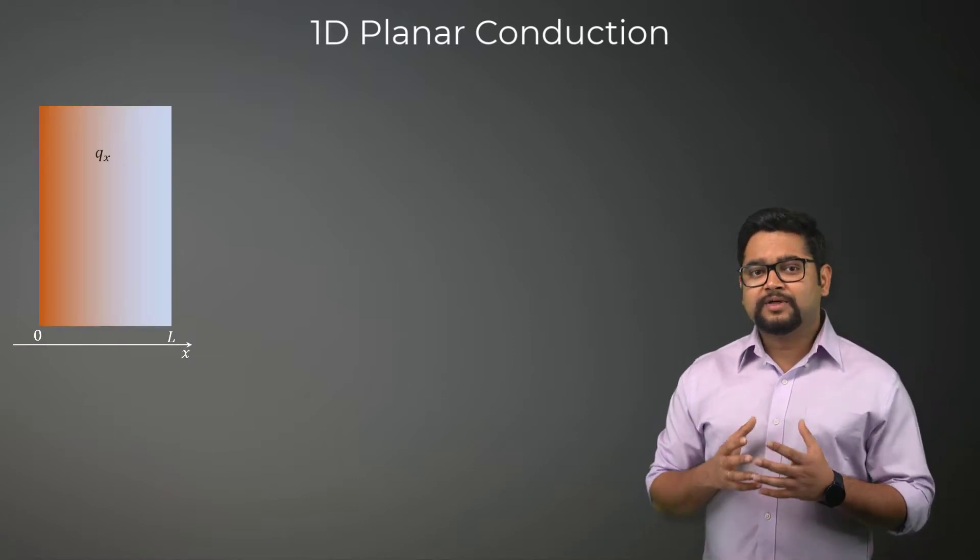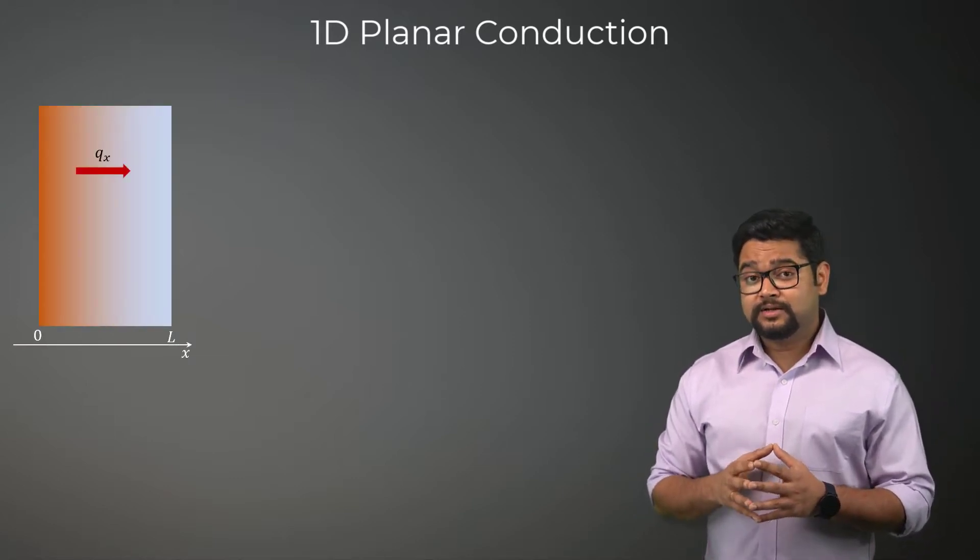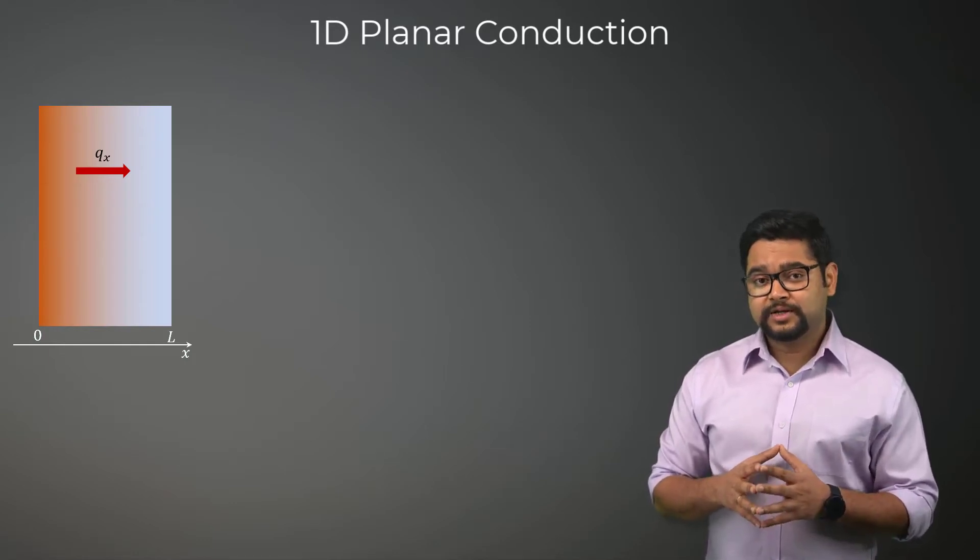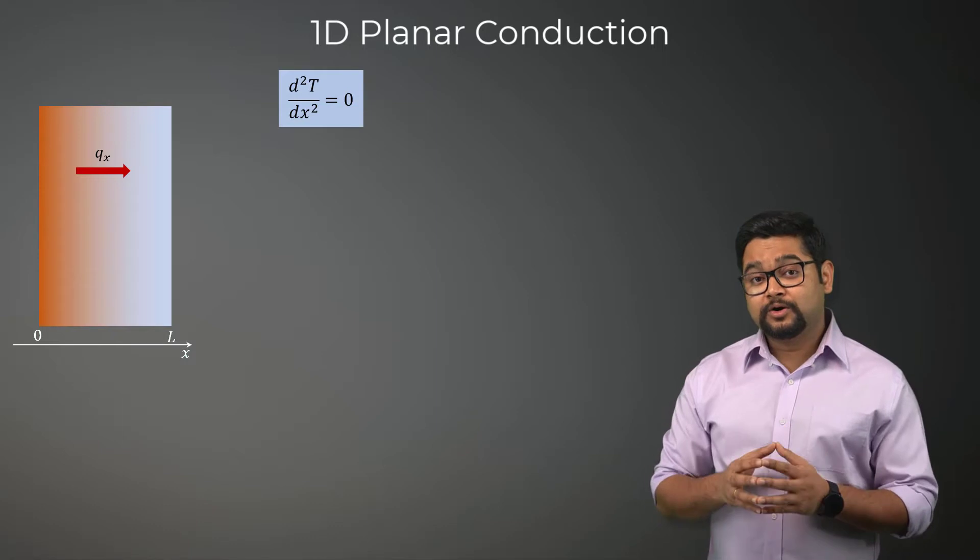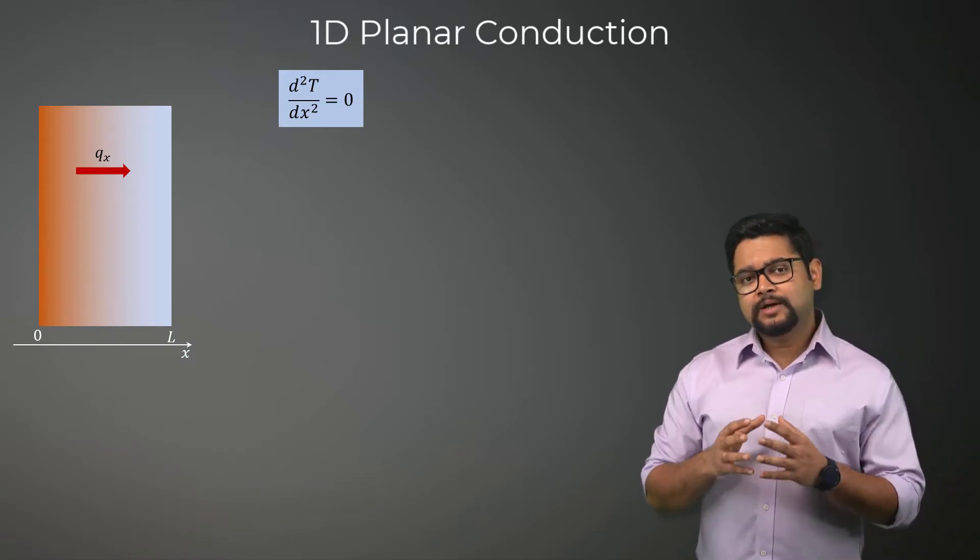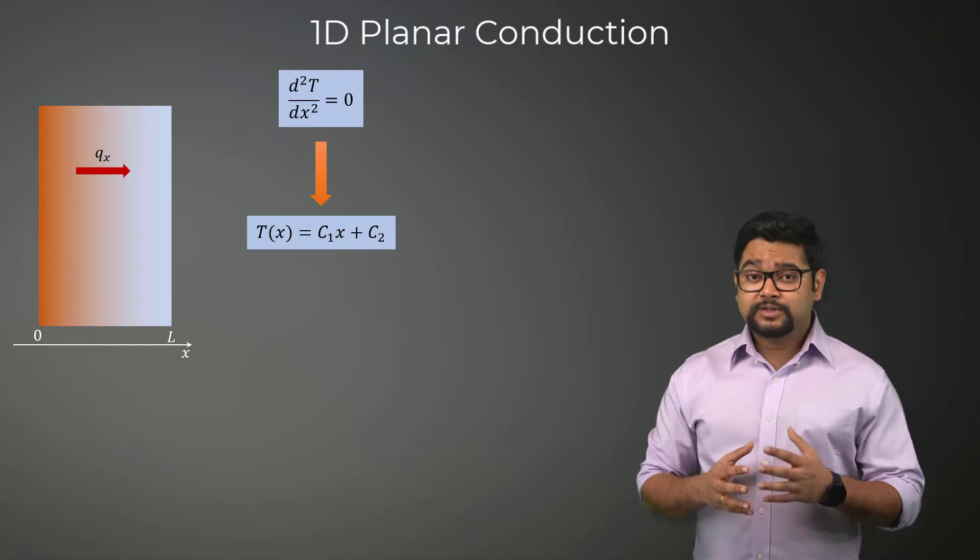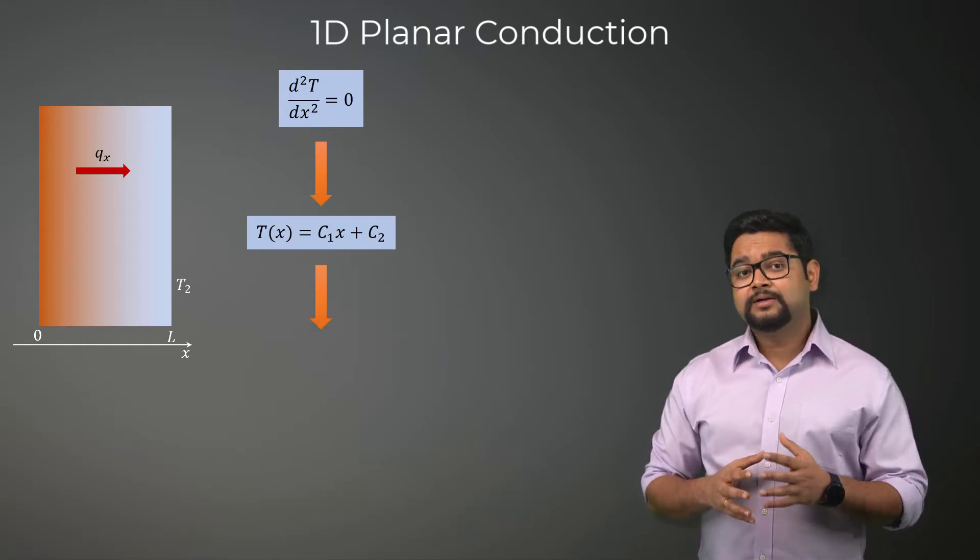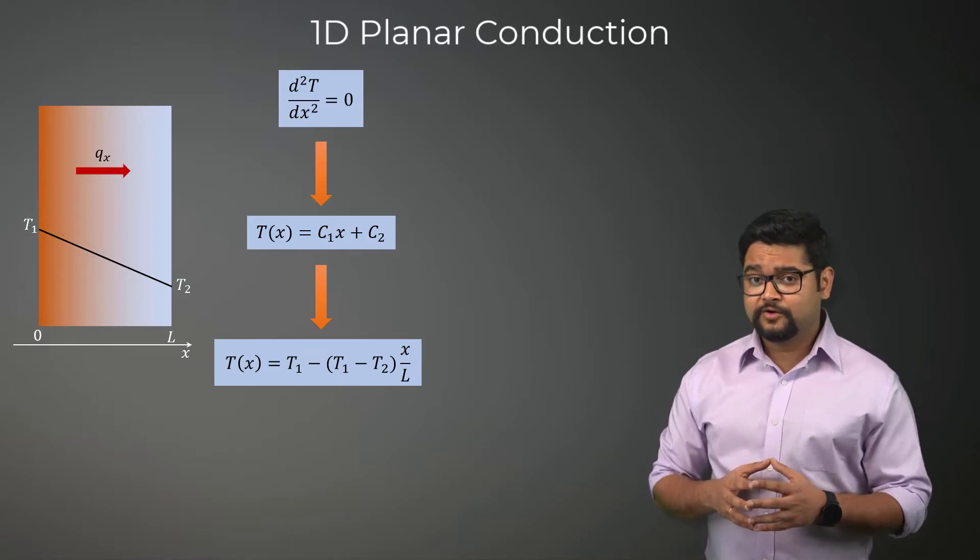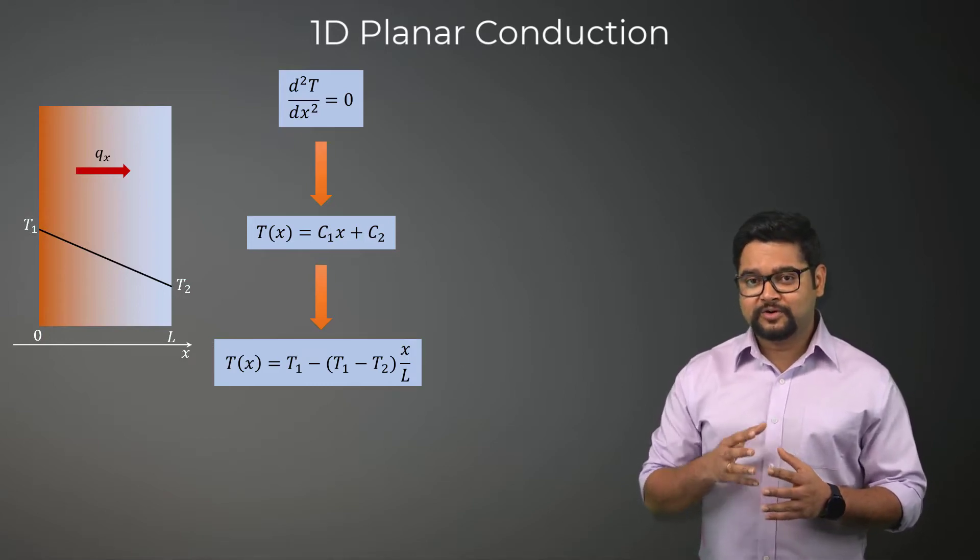Consider a planar wall of thickness L which is thin in the x-direction. For this system, the heat conduction equation reduces to an ordinary differential equation as shown here. Integrating this and using the boundary conditions to determine the constants of integration, we get the final solution in the form of a linear distribution of temperature.